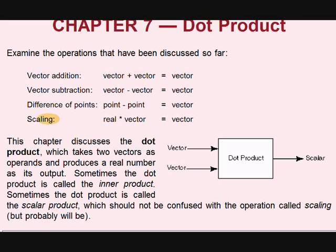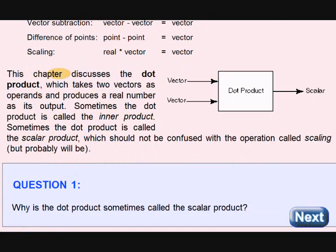What is scaling? Multiply a vector times a real number. It is a vector. In this chapter we will talk about dot product. This is a picturesque way of saying a very important thing.